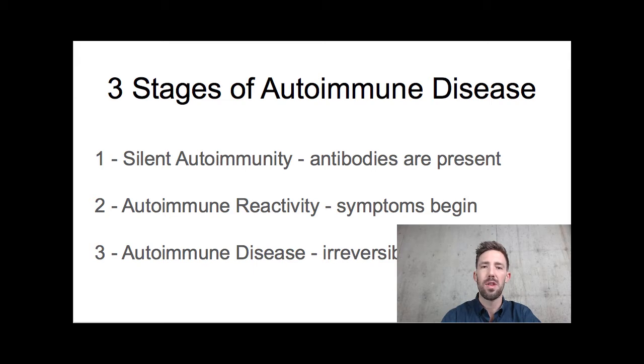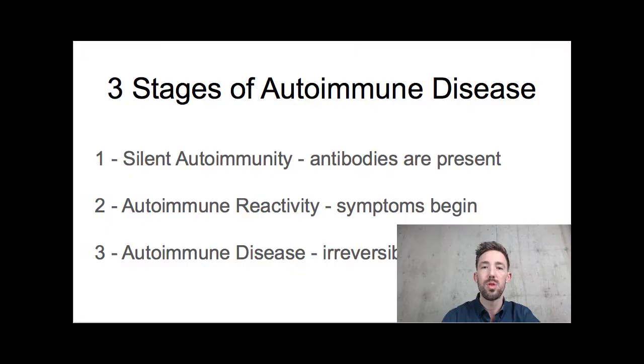Stage two is autoimmune reactivity, meaning there's starting to be a reaction and the patient is starting to notice symptoms. For thyroid disease, they're starting to get fatigue, hair loss, brittle nails, dry skin, constipation. But they go in to their doctor and they're told their labs look normal. This is very, very common — stage two autoimmune reactivity where people are starting to feel bad but their labs still look normal. You could be in that stage for a really long time.